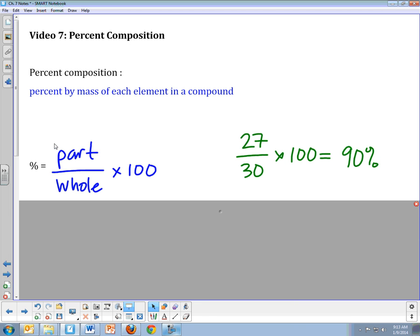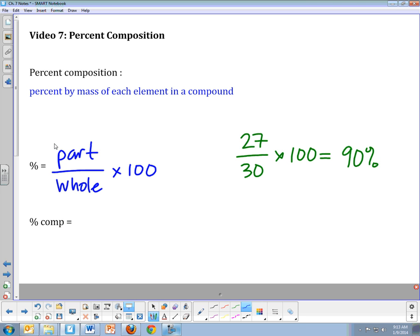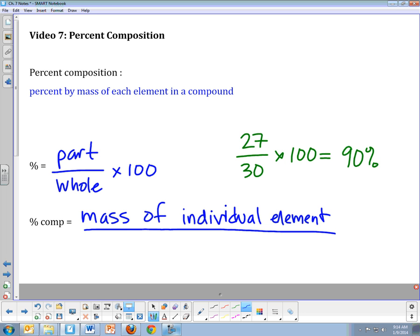What we're talking about in this case is the percent composition. So we want to know the percent of the masses. Our percent composition is going to be the mass of each individual element. That's your part, just one element in the compound. And you're going to divide it by the whole, which would be the total mass of the compound. That's going to give you your fraction, so we have to multiply by 100 to get that percent.